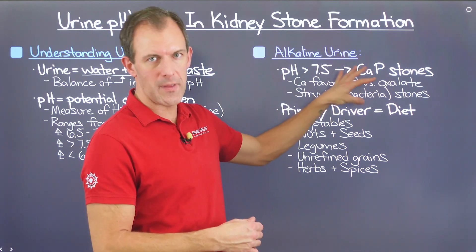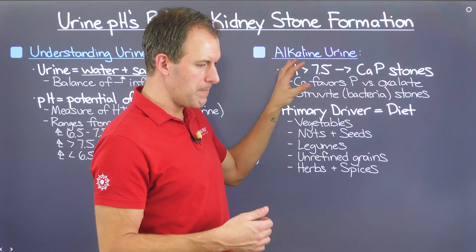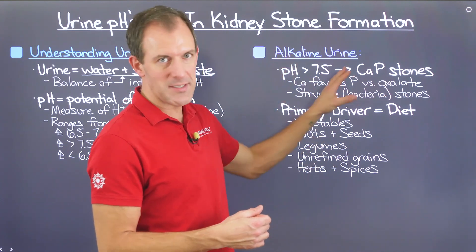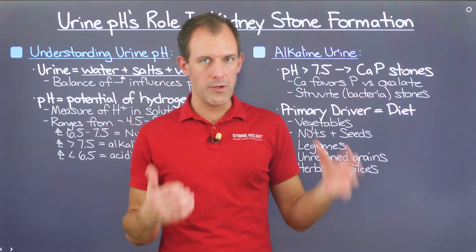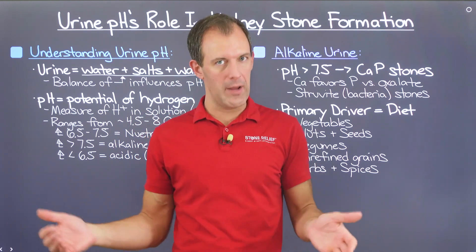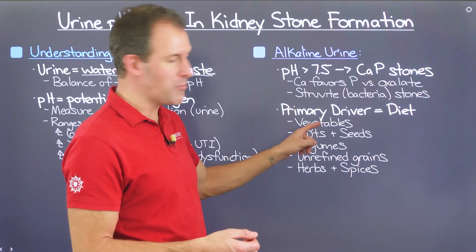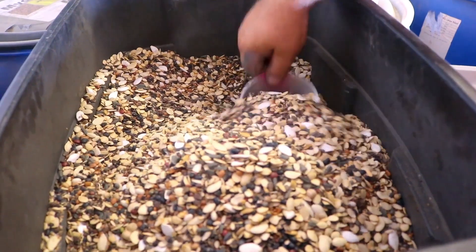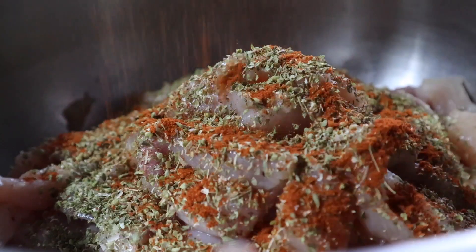The primary driver of urine pH really is diet — what we eat has the ability to positively or negatively influence this. When it comes to alkalizing your urine, consumption of things like vegetables, nuts and seeds, legumes, unrefined grains, ancestral grains, and herbs and spices are the main culprits.